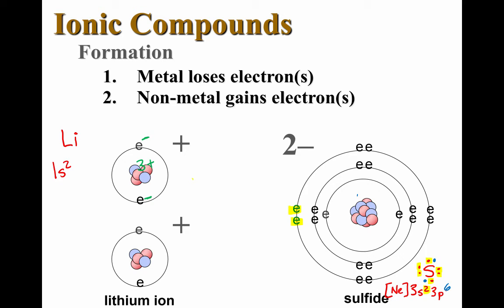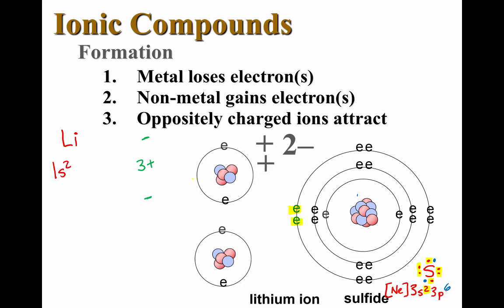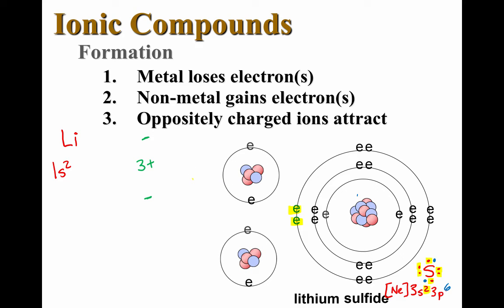Now the final part of this ionic compound formation occurs when the oppositely charged ions get together because as we all know opposites attract. And now we've created an ionic compound, a compound between two lithium ions and one sulfide ion held together by electrostatic attraction.